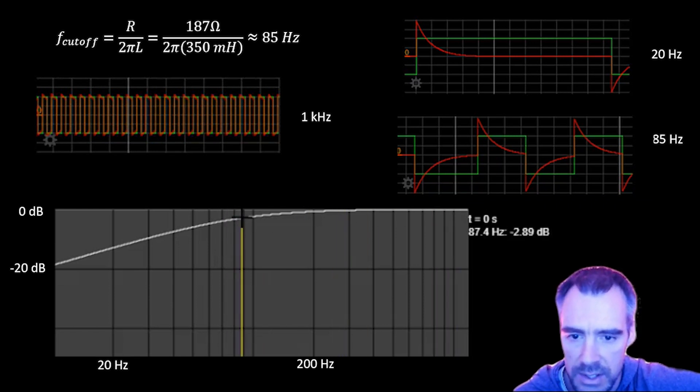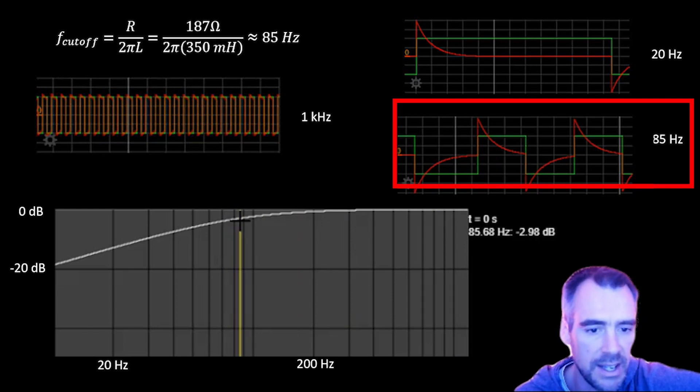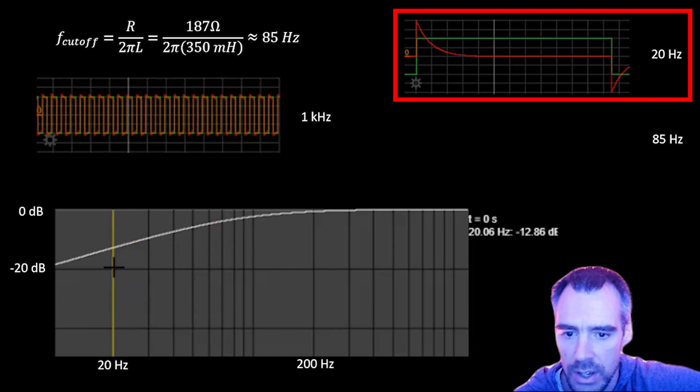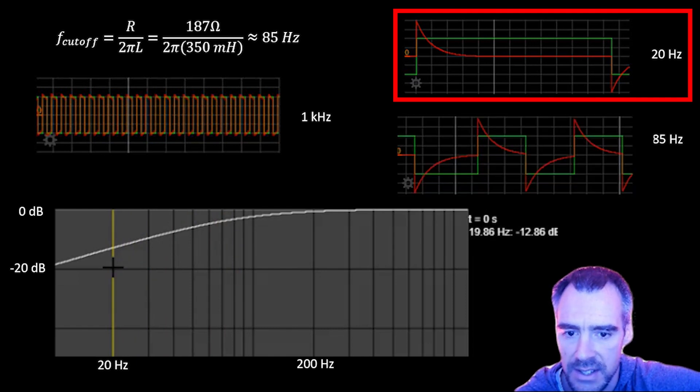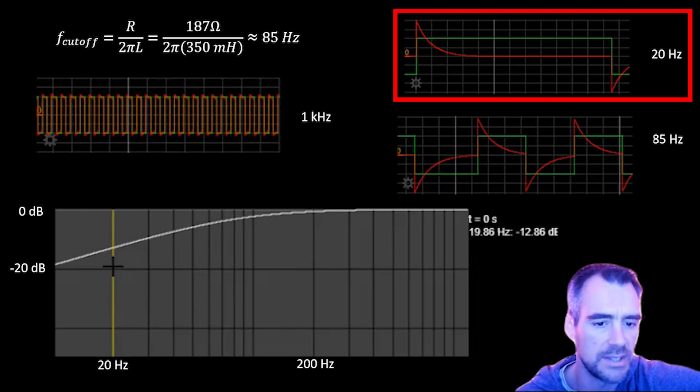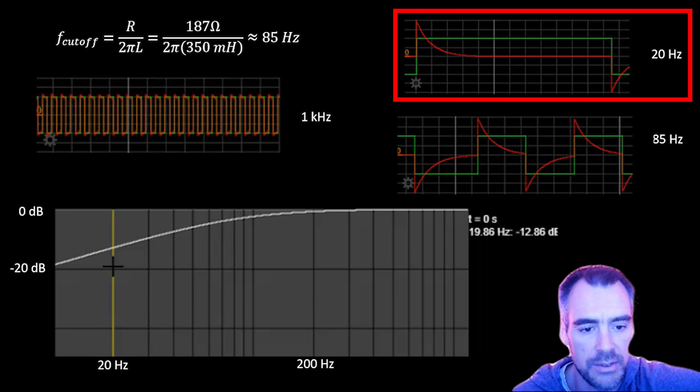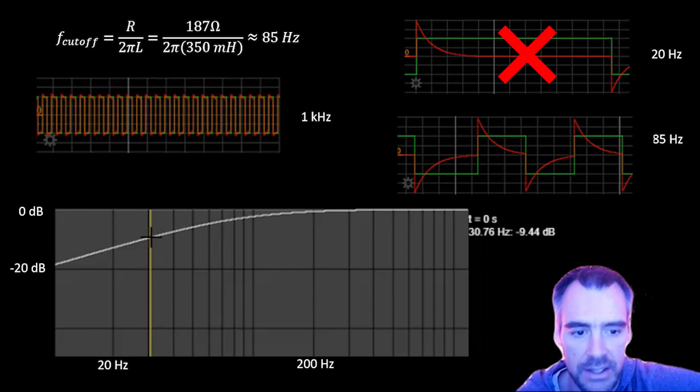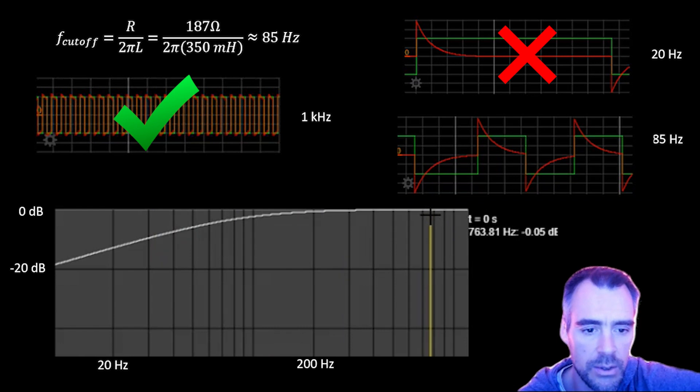If we go down to our cutoff frequency, which was at around 85, we're close to negative 3 dB, which is the definition of our cutoff frequency, where it's kind of like half passing and half not. If we go back down to 20 hertz, where we initially started, we can see it's at around negative 13 dB, which means it's pretty significantly attenuated. It'll pass a little bit, but not much. If you're looking at that voltage across the inductor, it's pretty much rejecting frequencies at that level.